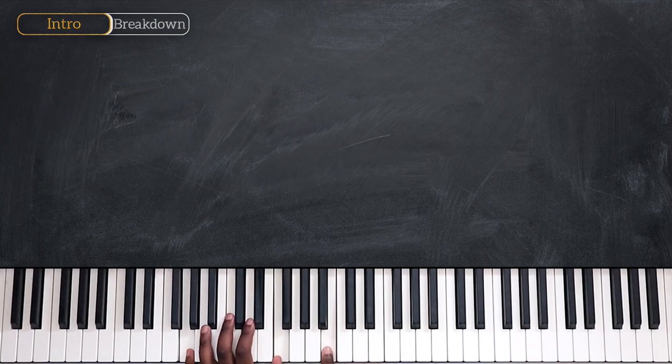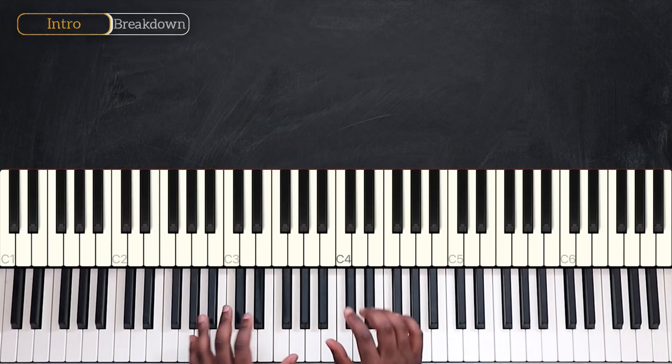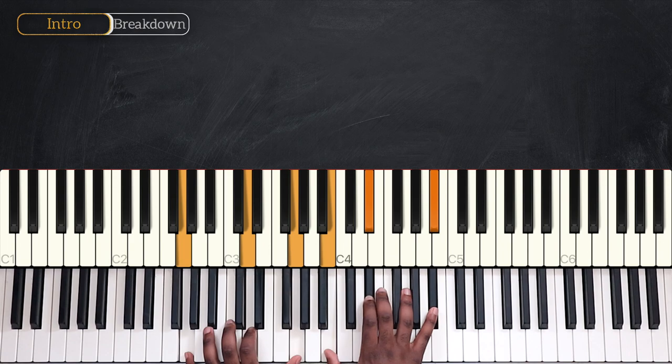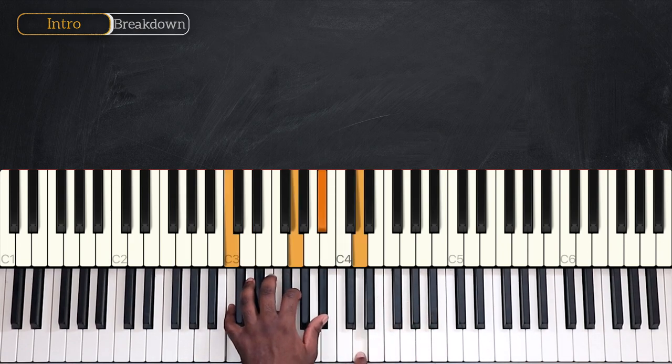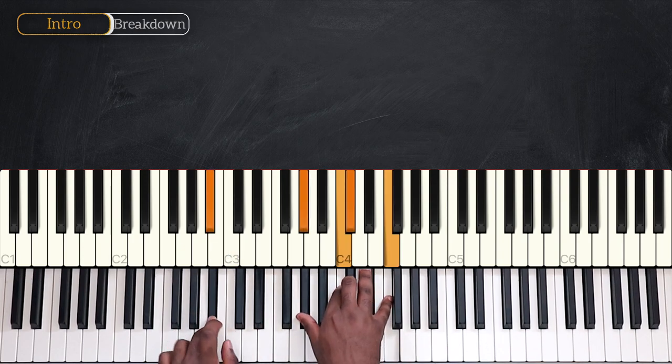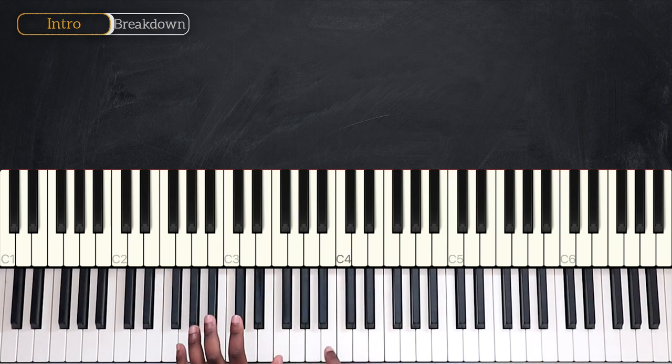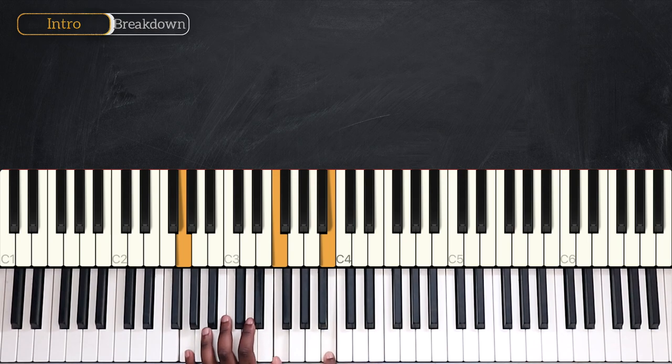Once again, we're starting with G sharp 9 flat 13, we're going to C minor 9, then B flat minor 9, A flat major 7, then G7. So here's the intro.